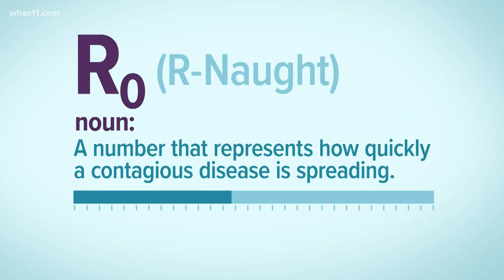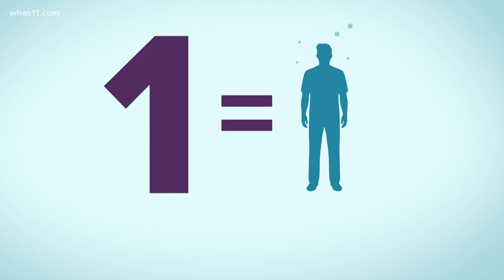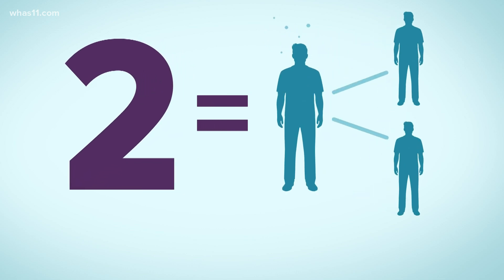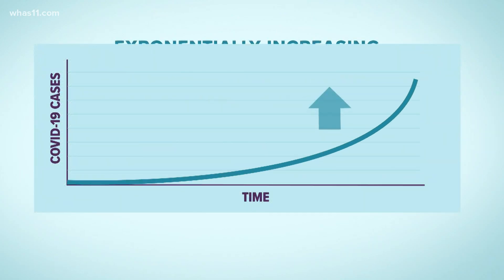To understand R-naught, all you have to do is think about the number one, a single case of coronavirus. If the R-naught is above one, that means every person with the illness is infecting one other person and that means the disease is increasing exponentially.